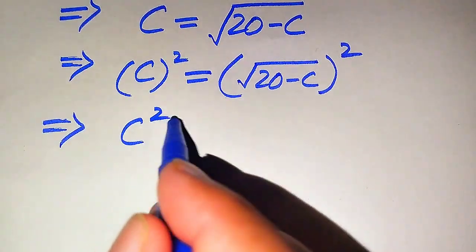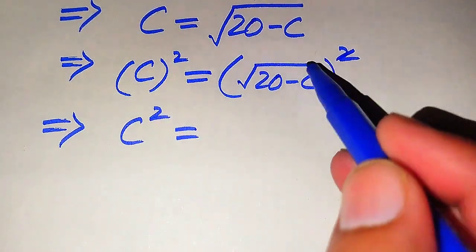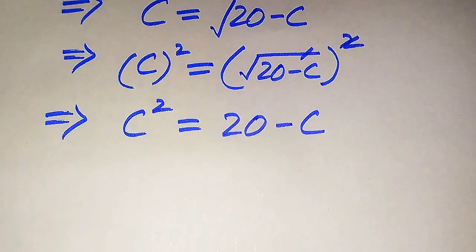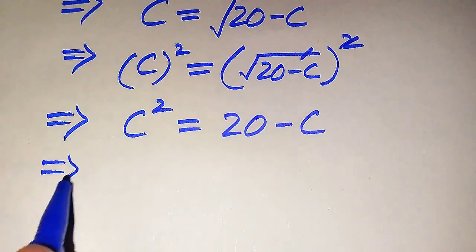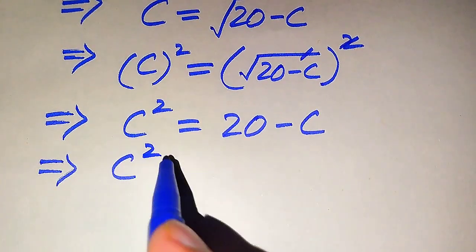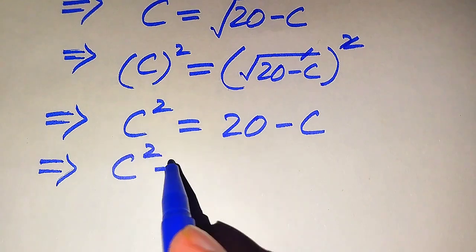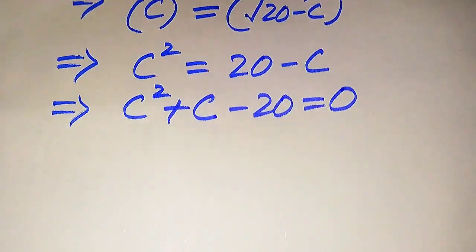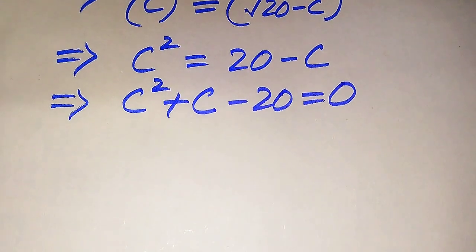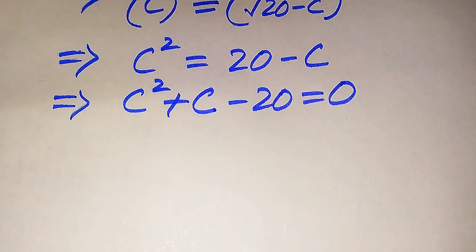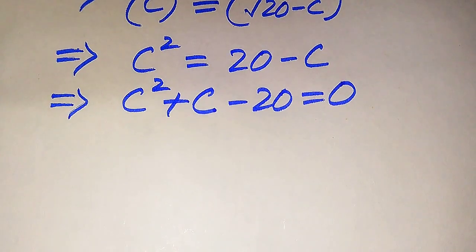The square root signs cancel and we obtain C squared equals 20 minus C. We move 20 minus C to the left hand side: minus C becomes plus C, and 20 becomes minus 20, giving C squared plus C minus 20 equals 0. This whole equation is a quadratic in the variable C.